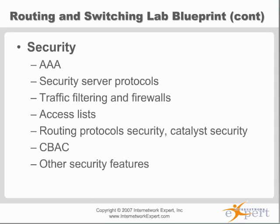Maybe you configured port security earlier on the switches, and then later you added HSRP. On your port security config you're allowing one MAC address, but HSRP by default uses its own virtual MAC address. So now you've got the router sending out traffic with two MAC addresses — port security activates, shuts down the port, and you're trying to configure HSRP and don't know why it doesn't work. You can definitely hose yourself up with these security features — break your network, lock yourself out of a router, or filter off traffic inadvertently through an incorrect configuration.